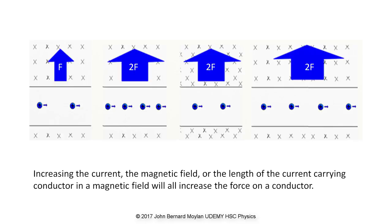The force on a current carrying conductor is also directly proportional to the length of the conductor in the magnetic field, as a longer conductor carrying a given current will have more moving charges within it than a shorter conductor carrying the same current. In the diagram, the force on the conductor is represented by the large blue arrows at the top. The magnetic field is depicted by the crosses, which represent a uniform magnetic field oriented into the page. The current is represented by the blue dots with the plus symbol on them, and the small arrows next to each dot represent the direction of motion of the electric charges.